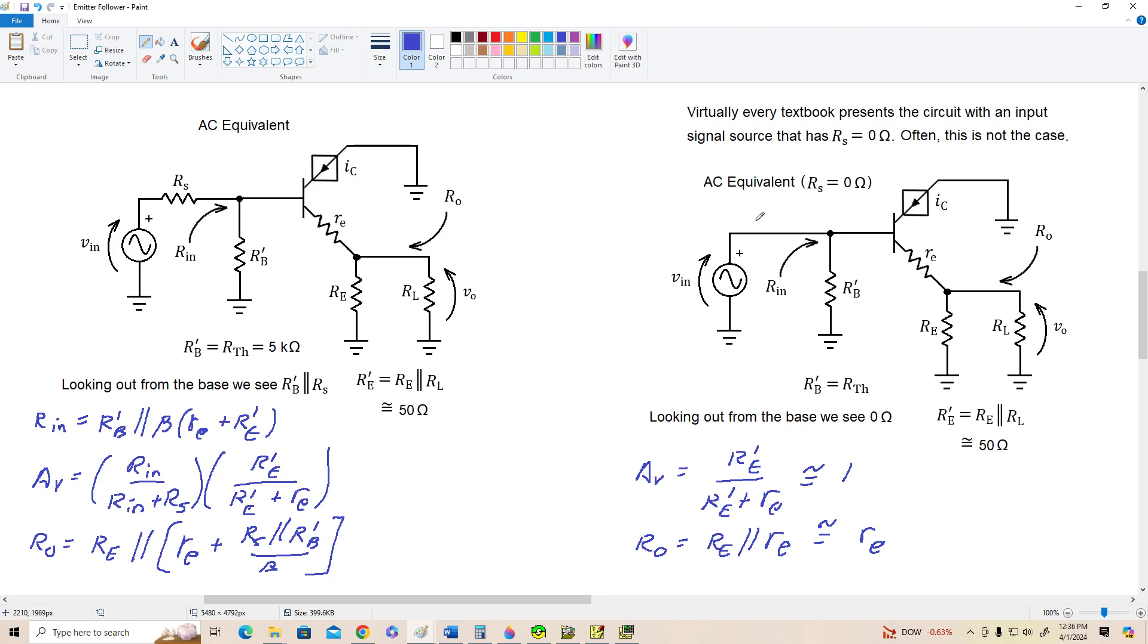And again, little RE is usually so small compared to big RE that the output resistance is approximately just little RE. And that's probably the reason why they like to use this version in all of the textbooks. It gives these nice simple equations, but if you have significant source resistance, you have to resort to these more complicated equations.